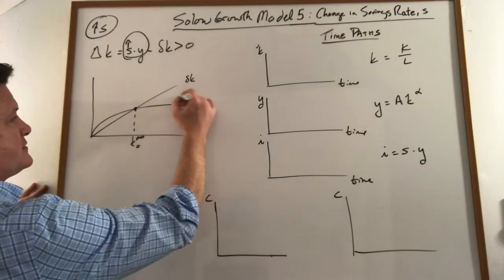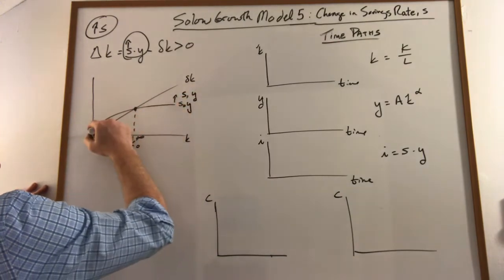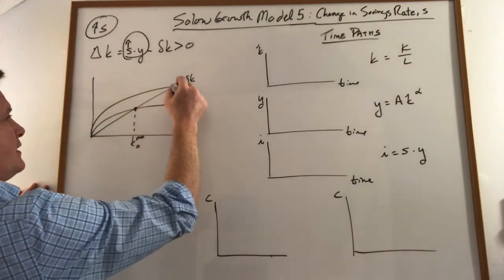Graphically, this goes from here up to a higher savings rate and we go to something like this.